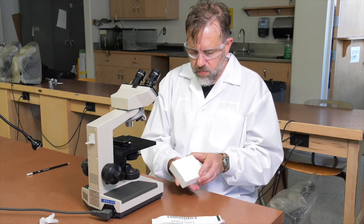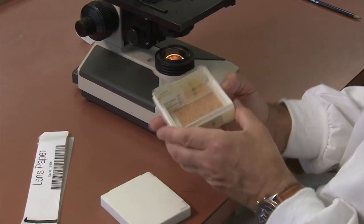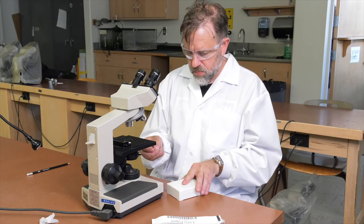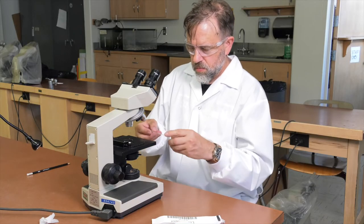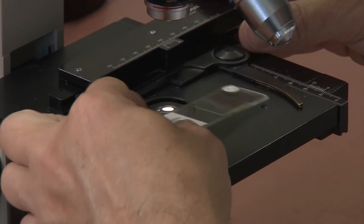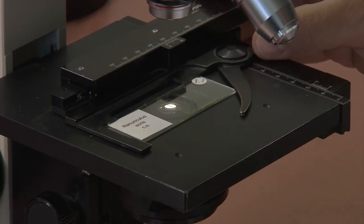Obtain a slide to use for calibrating your microscope. This may be supplied by your lab instructor or a slide that you have made yourself. Open the spring-loaded slide holder and insert the slide into the bracket. Gently release the slide holder so that the slide is held in place. If you are not careful, you may damage the slide.